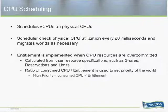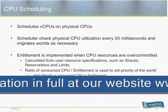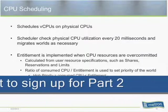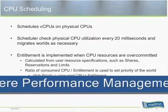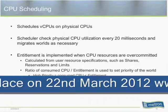This entitlement is implemented when the CPU resources are over-committed. It's calculated from resource user specifications such as shares, reservations, and limits. It does a ratio of consumed CPU against its entitlement, and that is used to set the priority of the world. An example on the slide shows — and the key word here is 'set' — we set the priority to high because our consumed amount of CPU is less than our entitlement. So we're setting that value to high because our consumed CPU is less than what we should actually be entitled to.